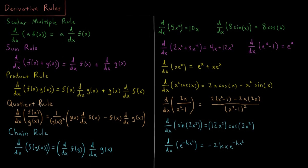Trickier still: the quotient rule. d/dx of f(x) divided by g(x) equals 1 over g(x) squared, times the quantity: denominator times derivative of the numerator minus numerator times derivative of the denominator. For example, d/dx of 2x over (x squared minus 1): derivative of the numerator is 2, derivative of the denominator is 2x. So we get 2 times (x squared minus 1) minus 2x times 2x, all divided by (x squared minus 1) squared.